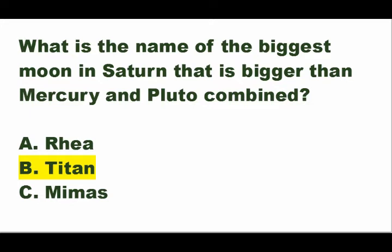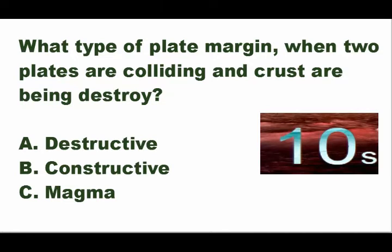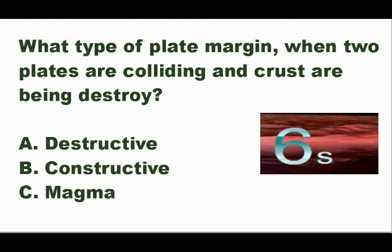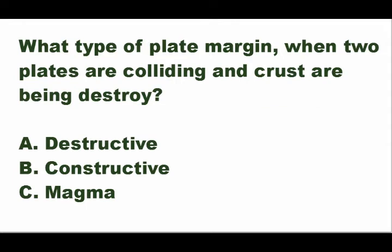Next question: what type of plate margin occurs when two plates are colliding and crust is being destroyed? Is it A — destructive, B — constructive, or C — magma? The answer is letter A — destructive. A destructive margin is when two plates are colliding and crust is being destroyed.